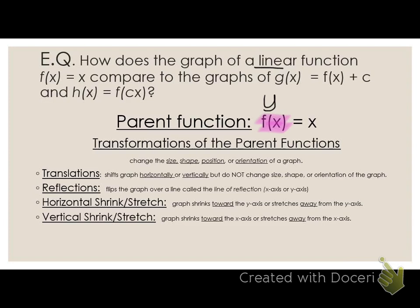Here are the transformations of parent functions — here's what they do. They change the size, the shape, the position, or the orientation of a graph. There are four transformations we're going to look at. Number one is translations. These shift graphs horizontally or vertically, but they do not change the shape, the size, or the orientation of the graph. A translation simply moves that line up, down, left, or right.